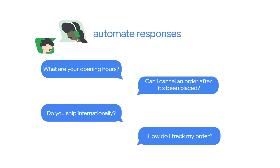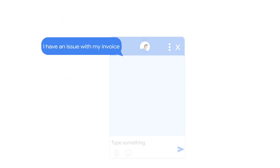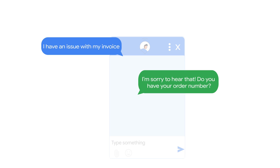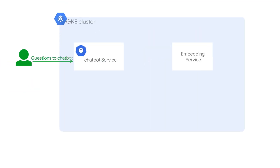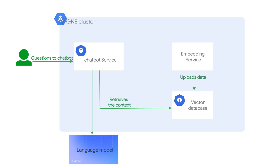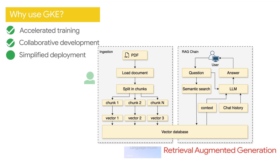Now let's look at another example. A customer support team wants to automate responses to common questions using a conversational AI chatbot. They need a chatbot that can understand natural language and provide accurate and helpful responses. To create the chatbot, the support team uses Gemma, a popular language model. Since they already use GKE for other tasks, they build the chatbot using their existing GKE infrastructure. This gives them more control and helps them understand the chatbot architecture, thanks to tools like Retrieval Augmented Generation.